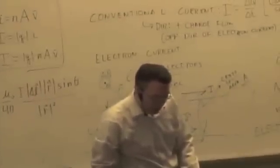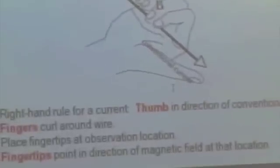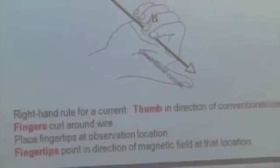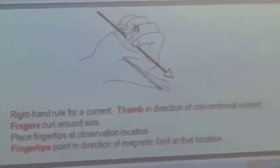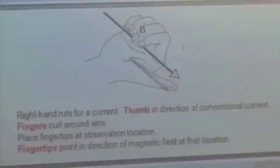So I could also do the right-hand rule this way. Point your thumb in the direction of conventional current. It's got to be conventional current. Fingers curl around in the direction of the magnetic field.